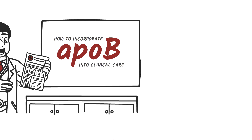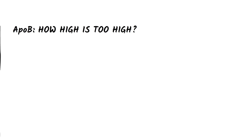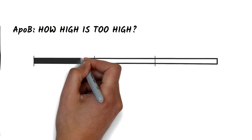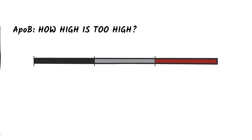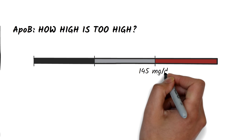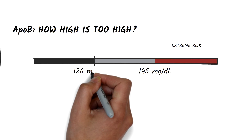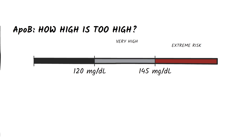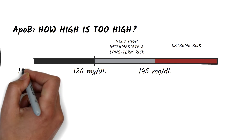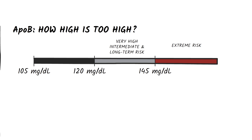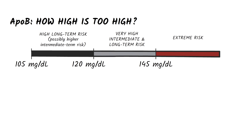But first, when it comes to ApoB, how high is too high? We look at three ranges. An ApoB above 145 mg per deciliter indicates an extreme risk of cardiovascular disease. An ApoB between 120 and 145 mg per deciliter indicates a very high intermediate-term and long-term risk. And finally, a patient whose ApoB is between 105 and 120 mg per deciliter is considered at high long-term risk and might be at high or intermediate-term risk.